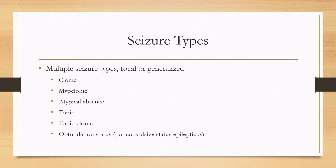They can have pretty much any type of seizure: clonic, myoclonic, atypical absence, tonic, and tonic-clonic, as well as obtundation status, which is a type of non-convulsive status epilepticus.